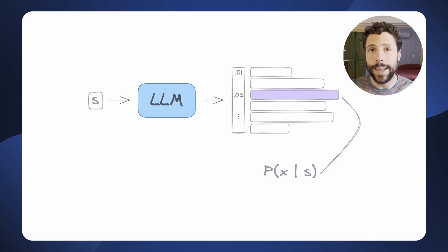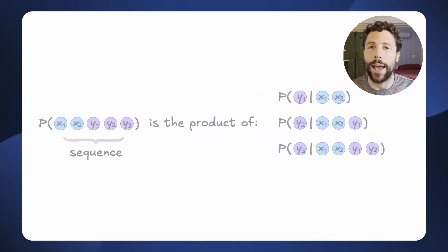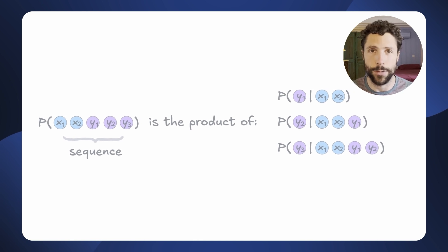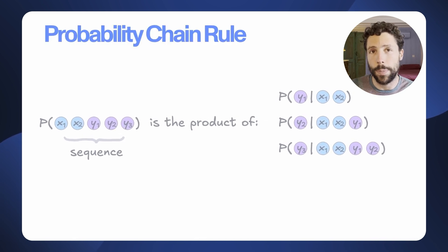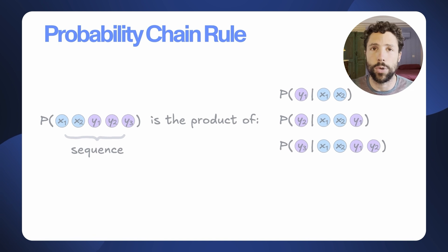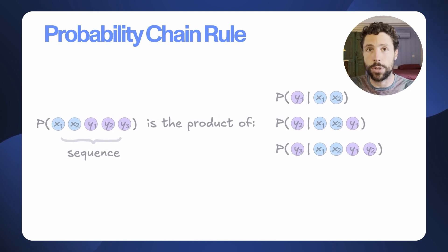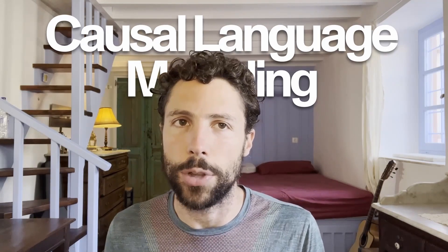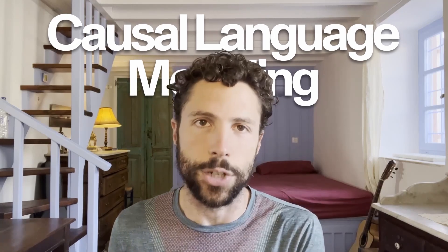A language model can be pictured as a function mapping a token sequence to a vector of probabilities. For any token X in the vocabulary, we have the probability of X conditioned on the sequence S — the likelihood that X would follow S. We can compute the probability of any full sequence using the probability chain rule, decomposing it into a product of conditional token probabilities. This defines causal language modeling, the dominant method for text generation.